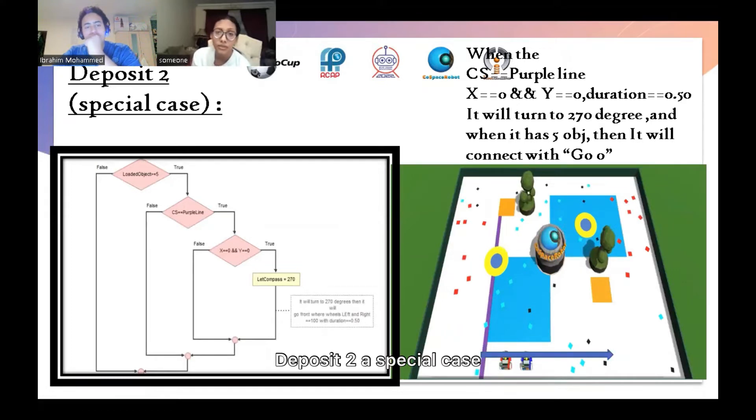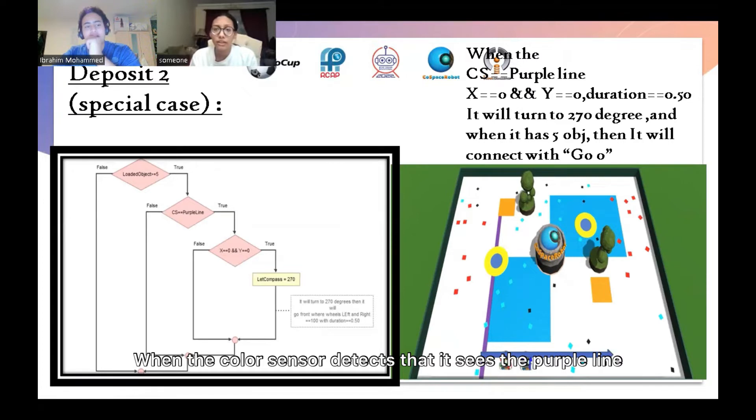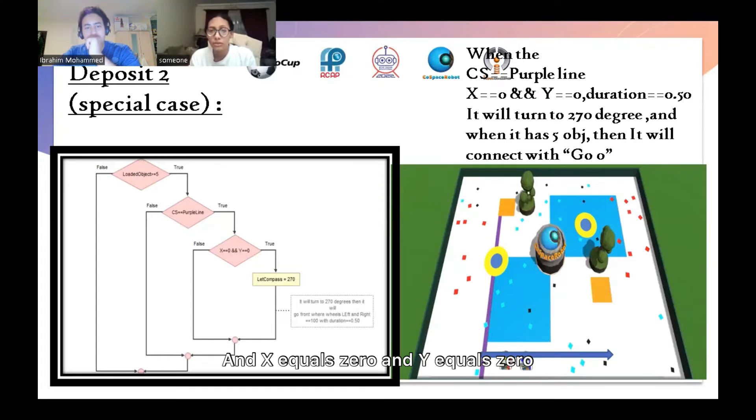Deposit 1 special case: When the color sensor detects that it sees the purple line, and x equals 0, and y equals 0, the duration will be 0.5, and it will turn to 270 degrees. Then, when it has 5 objects, it will go.